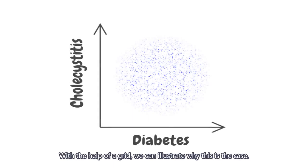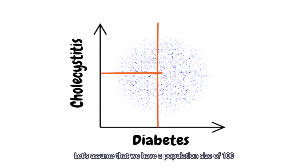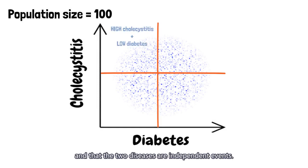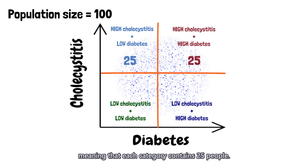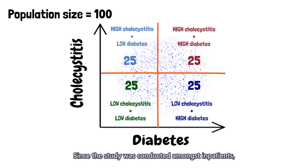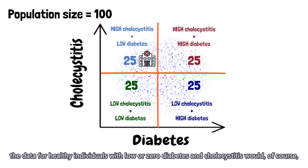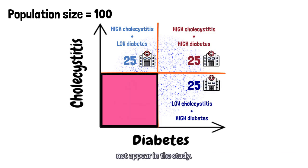With the help of a grid, we can illustrate why this is the case. Let's assume that we have a population size of 100, and that the two diseases are independent events. As such, the distribution of population would be even among the four categories, meaning that each category contains 25 people. Since the study was conducted amongst inpatients, the data for healthy individuals with low or zero diabetes and cholecystitis would, of course, not appear in the study.